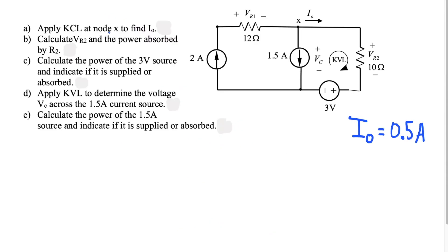Now let's do number b. We need to calculate VR2 and the power absorbed by R2, which is the 10 ohm resistor. We know i_naught equals 0.5 amps coming through this loop, entering the positive side of VR2. Because current enters the positive side of the circuit element, we know automatically that power is absorbed. If it entered the negative side, we'd say power is being supplied.